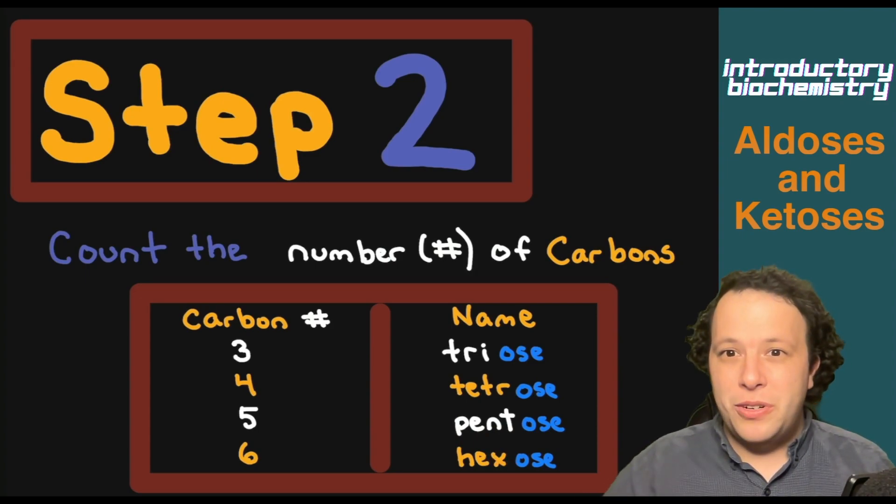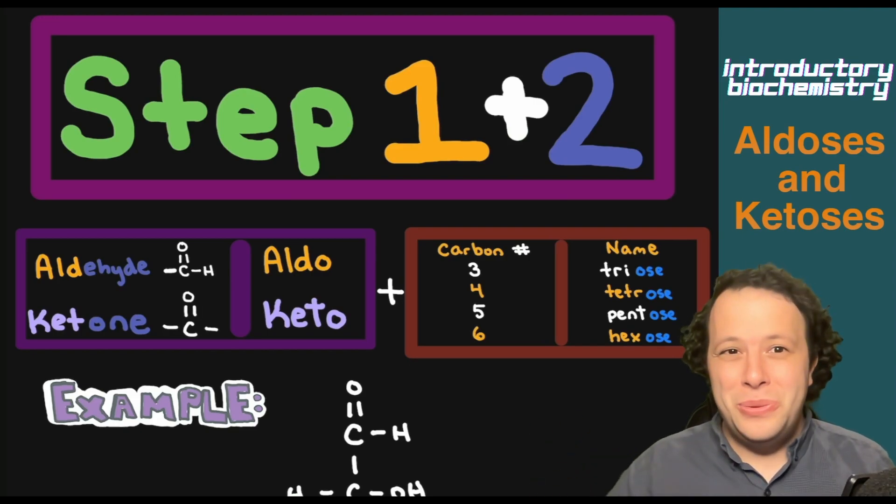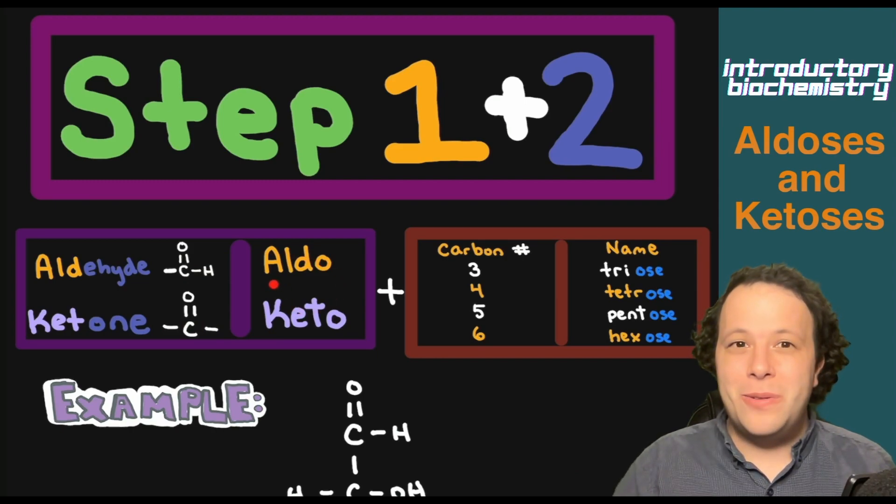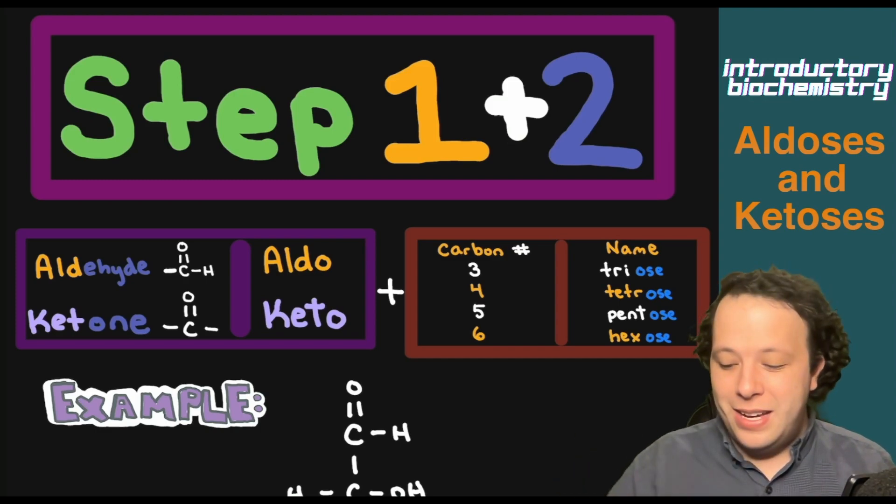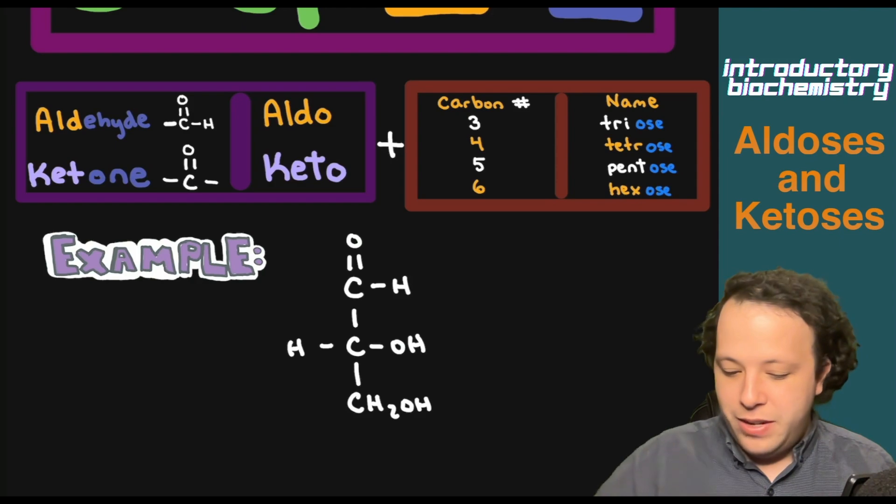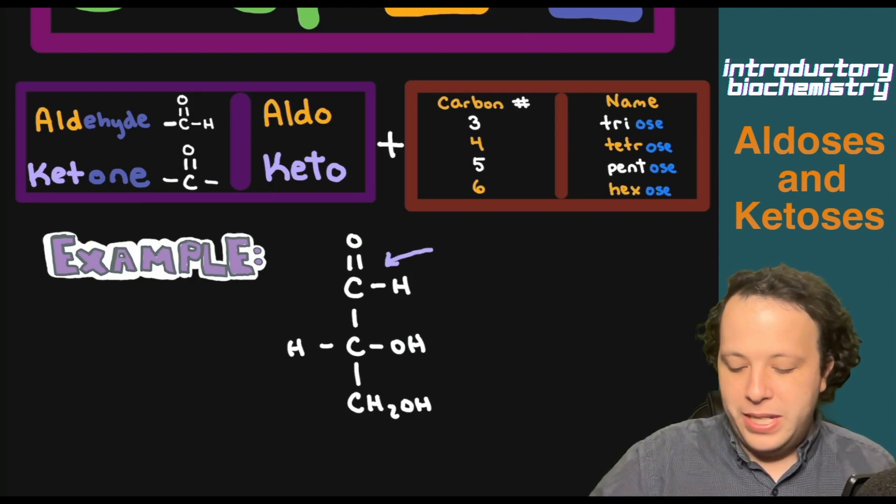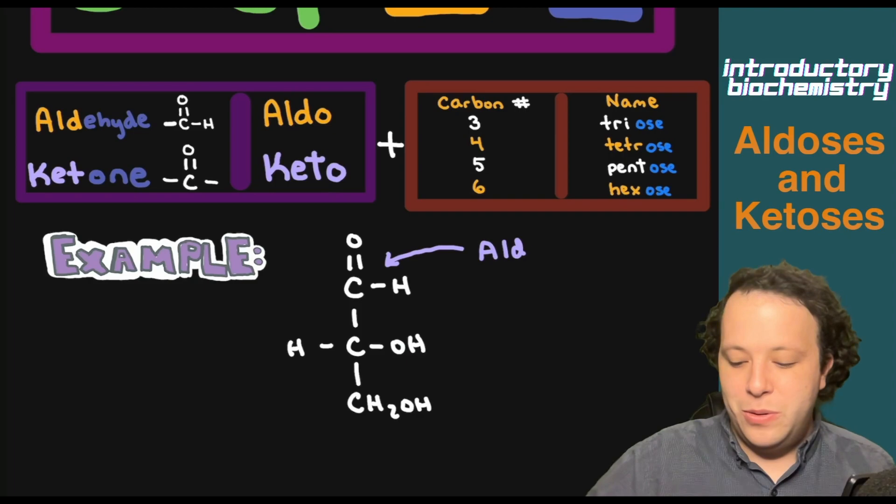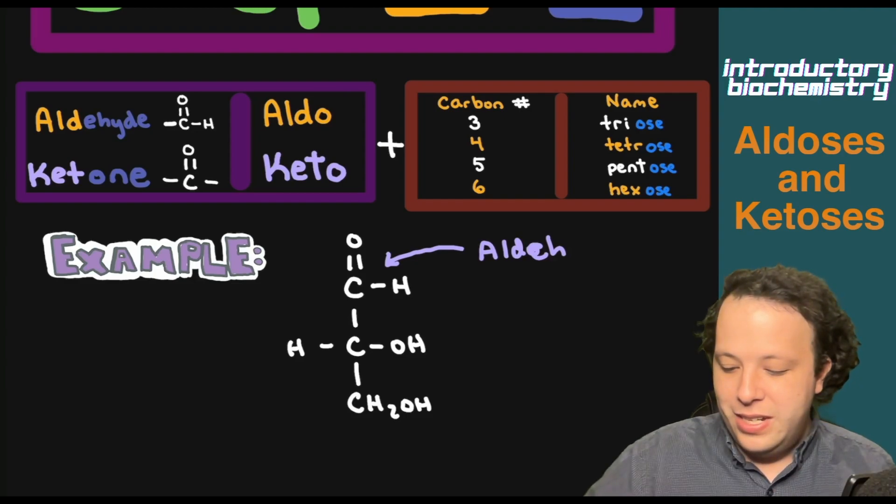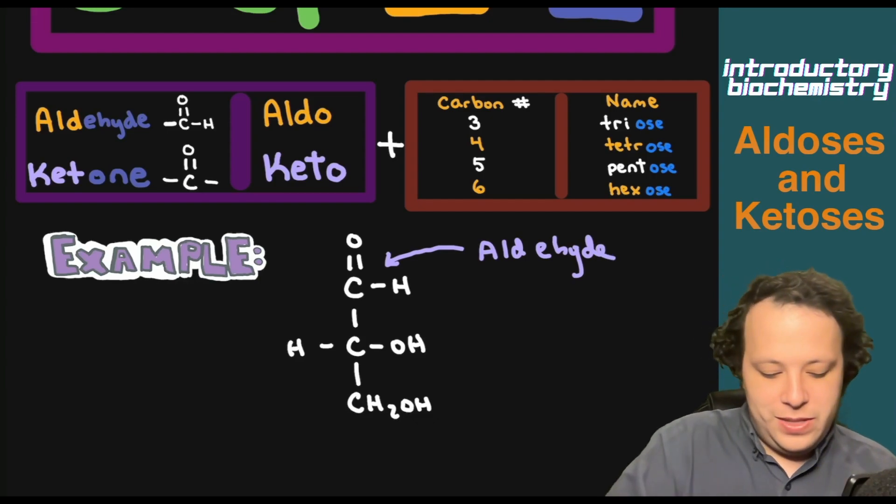For the next portion, we are going to combine step one and two, which being that we have the aldehyde and ketone from the first step. So we're going to take aldo or keto, depending on the functional group, and we're going to combine that with the number of carbons that we have. So if I have the example here, what we're going to do is first identify the functional group. And what we can see up here is that we have an aldo or an aldehyde.